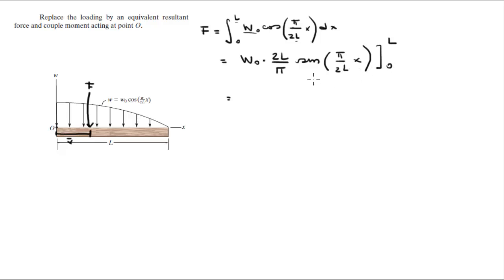Sin of 0 is 0, so this whole thing becomes 0. Now you plug in L and the L is gonna cancel out with this L. So when you plug in L you're gonna get sine of pi over 2. When you plug in L you're gonna get W0 times 2L over pi, and that is the magnitude of the force.